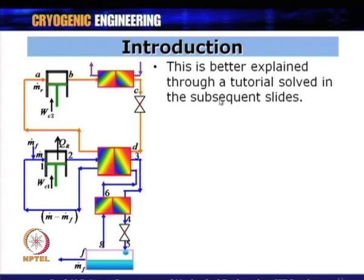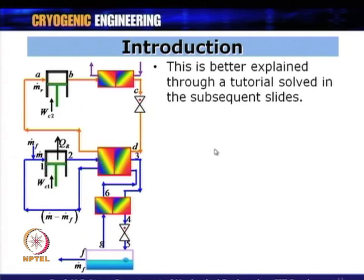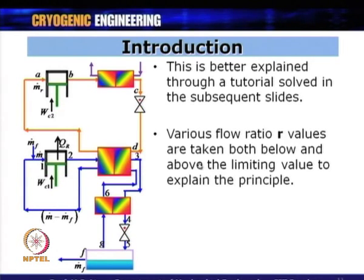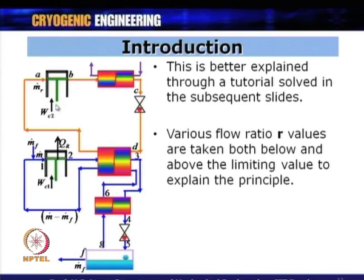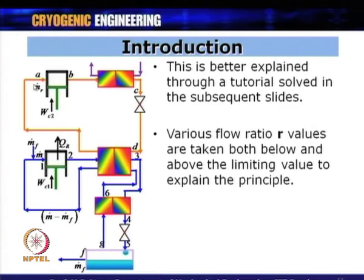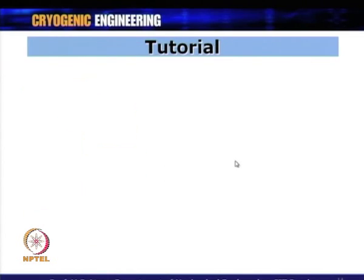This is better explained through a tutorial solved in subsequent slides. To understand this, we will solve a problem from which we can draw conclusions. In this problem, various flow ratio R values — both below and above the limiting value — are taken to explain the dependence of the entire system performance on the value of R. This tutorial has two parts.